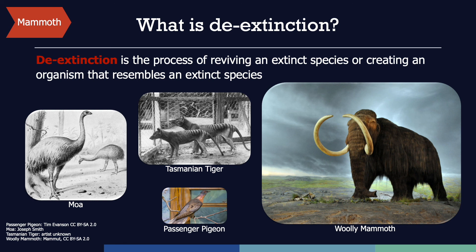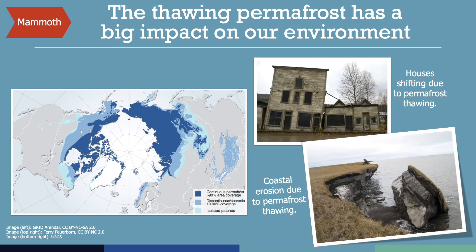One of the reasons mammoths are being considered for de-extinction is the potential role they could play in slowing the thawing of permafrost. The permafrost is a layer in the ground that remains below 32 degrees Fahrenheit, or 0 degrees Celsius, for at least two years in a row. Permafrost is found in areas where the average temperature rarely gets above freezing, on land as well as below the ocean floor. As average global temperatures rise, the total area of permafrost is shrinking. Thawing of the permafrost is a particular concern because the frozen soil stores significant amounts of carbon. This carbon is released in the environment in the form of carbon dioxide and methane — two greenhouse gases that trap infrared radiation near the Earth's surface, and therefore could accelerate the rise of average temperatures around the globe.